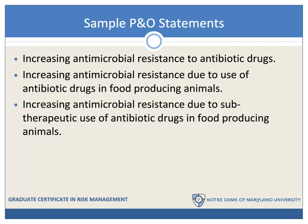Here is an example of iterative development of a problems and opportunities statement. Suppose we become aware of increasing antimicrobial resistance to antibiotic drugs — meaning bacteria that cause harm to humans develop resistance to drugs used to control them. As we investigate, we refine the statement to say the problem is increasing antimicrobial resistance due to the use of antibiotic drugs in food-producing animals. And refining further, it becomes increasing antimicrobial resistance due to sub-therapeutic use of antibiotic drugs in food-producing animals. You can see our understanding of the problem is evolving.